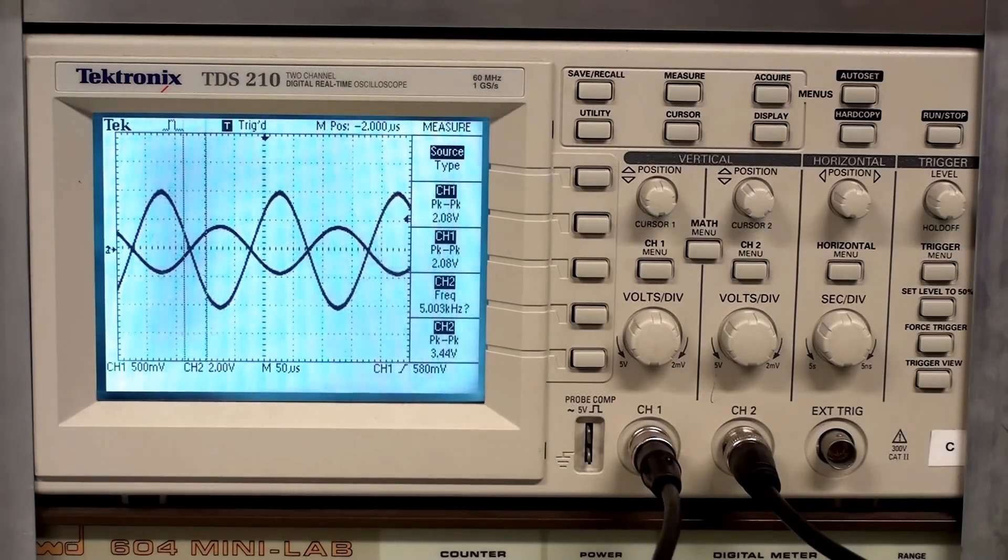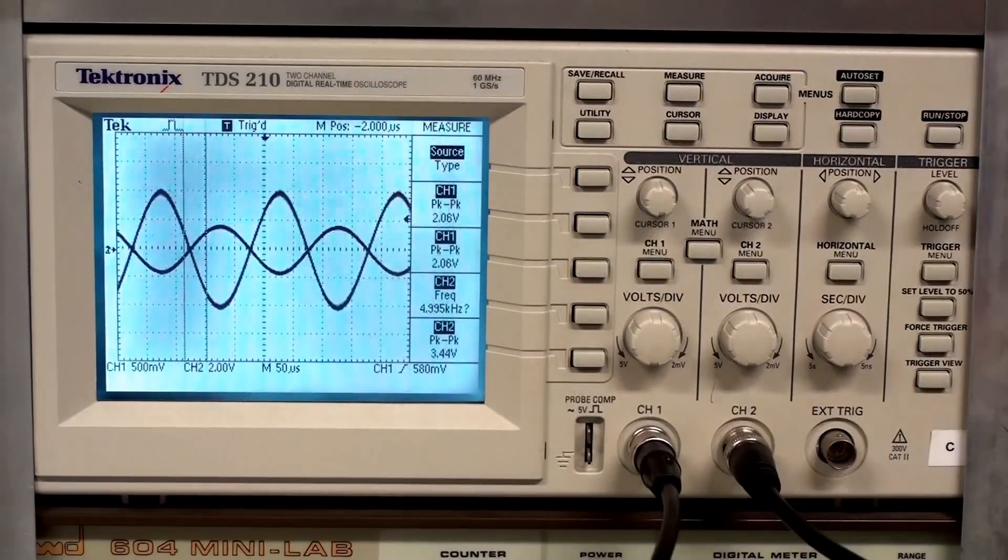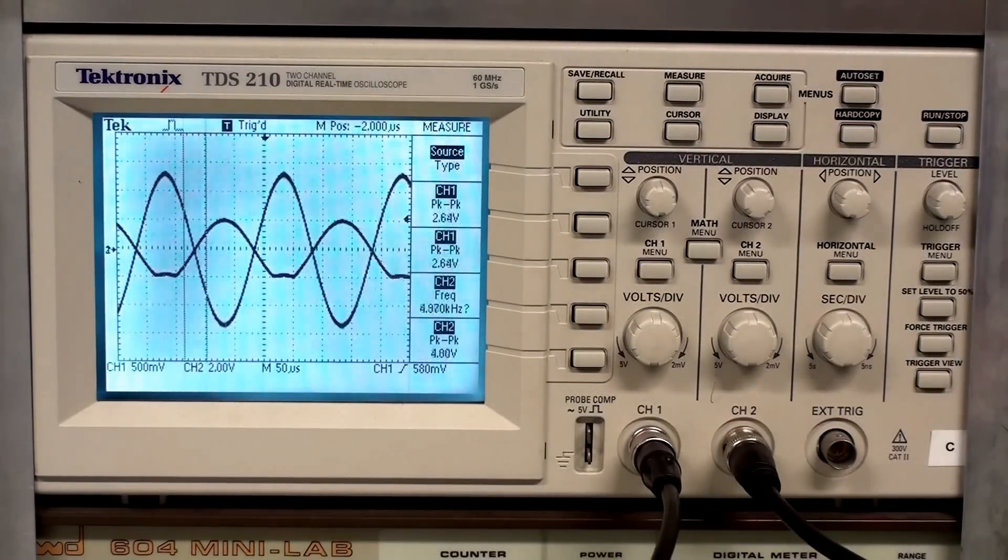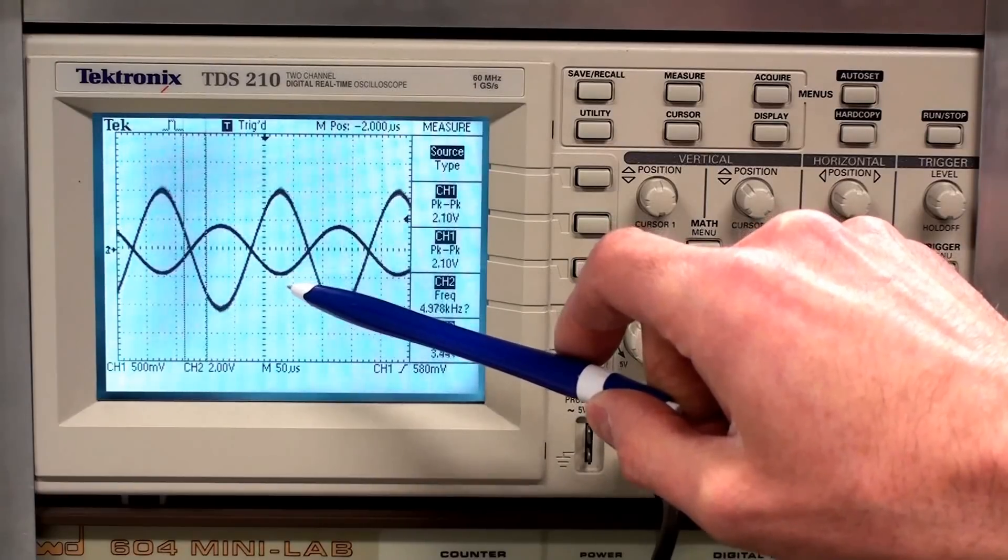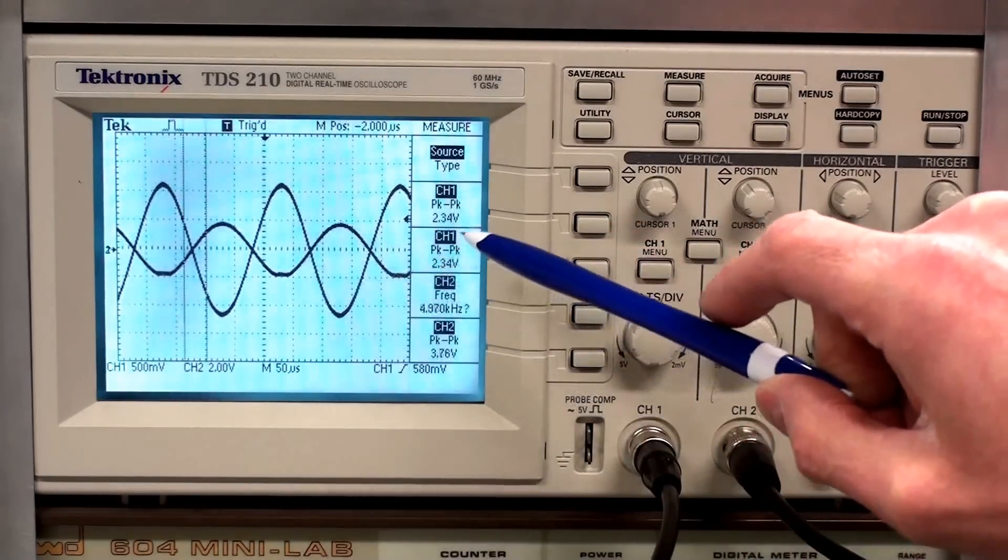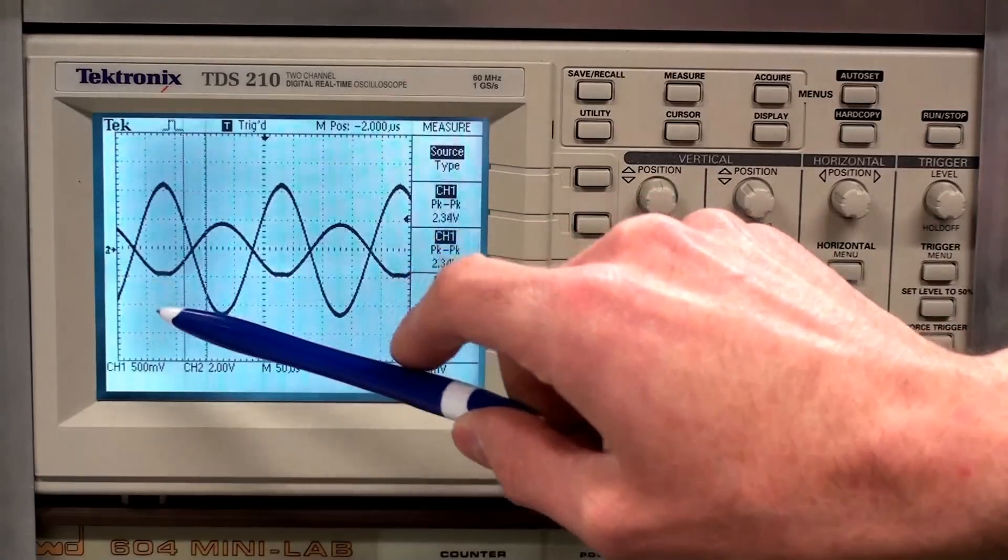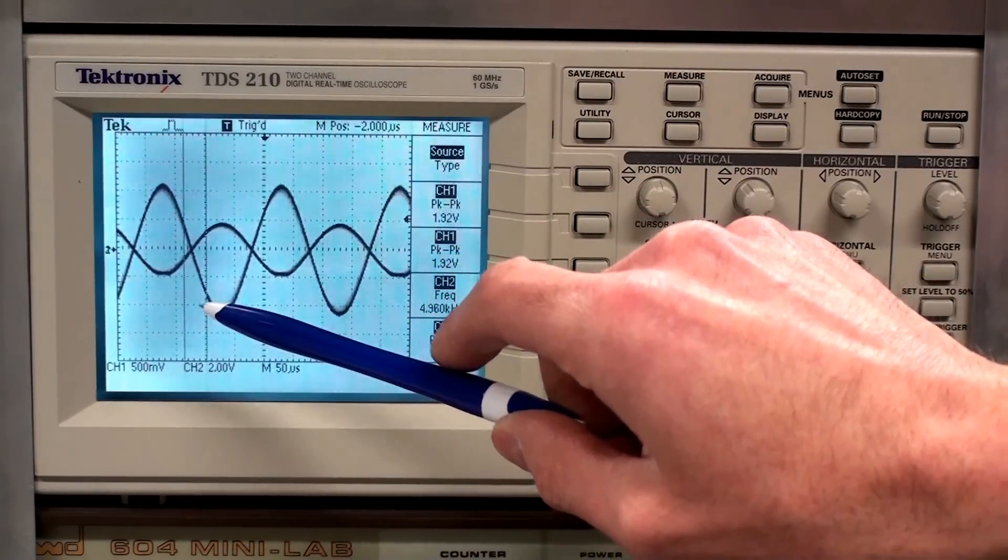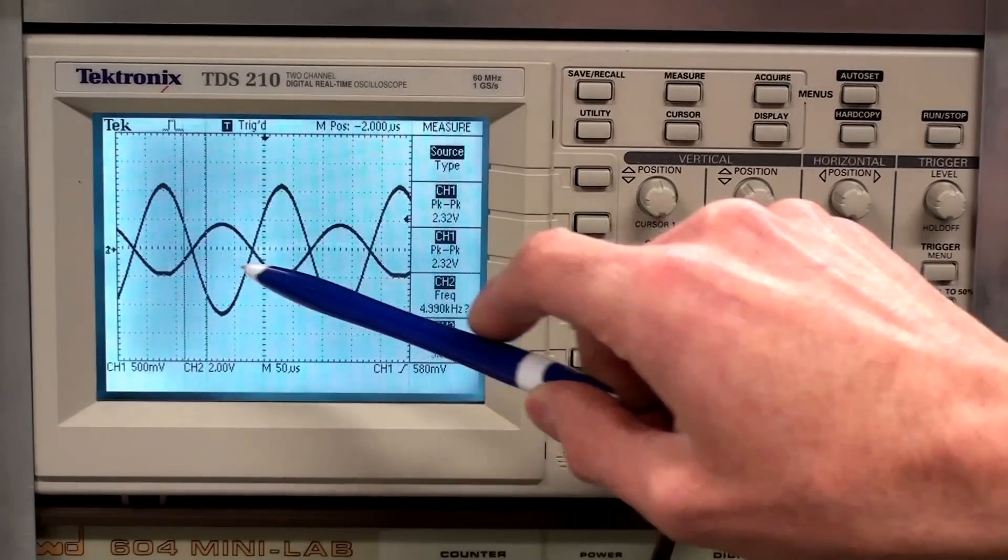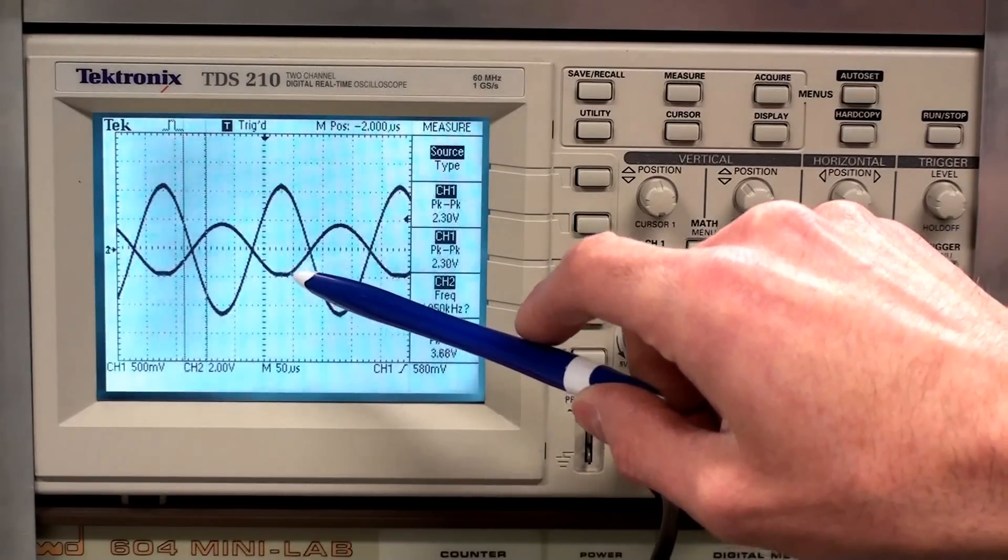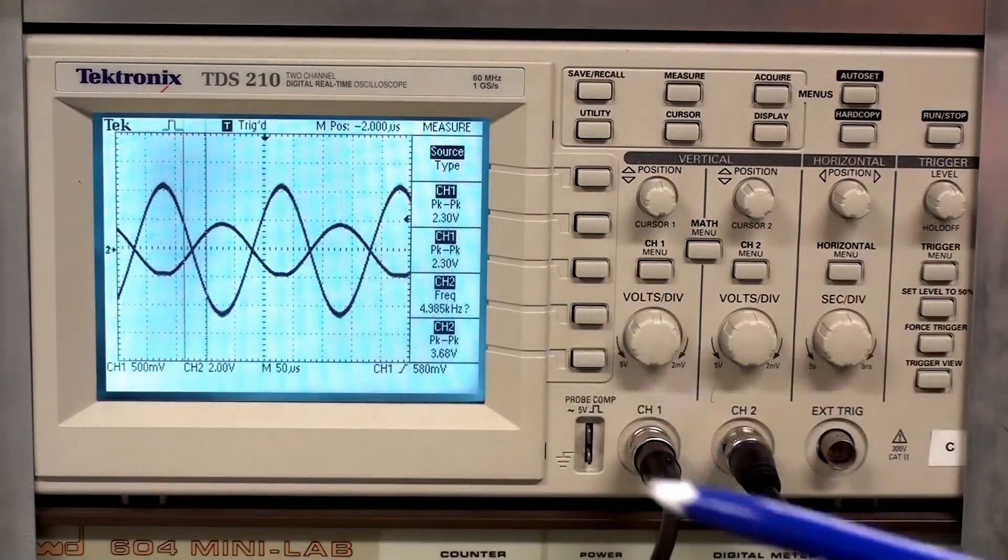If I increase the input, which is this trace here, if you watch that trace there, if I increase the input, we can see that clipping starts to occur at about 2.3 volts peak to peak on the input. Clipping, the amplifier starts to saturate.